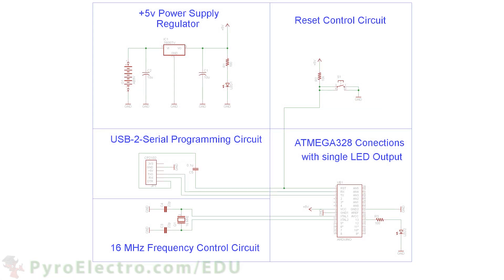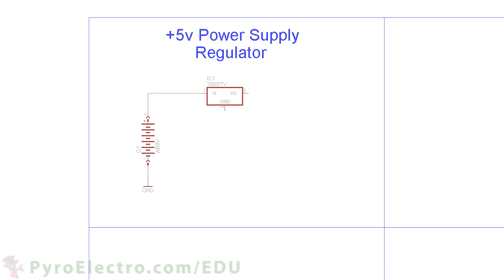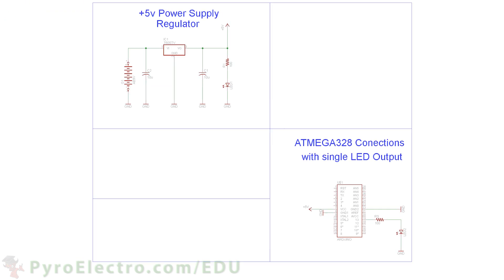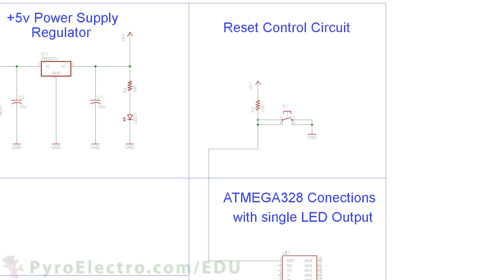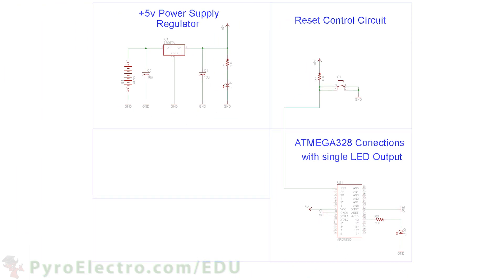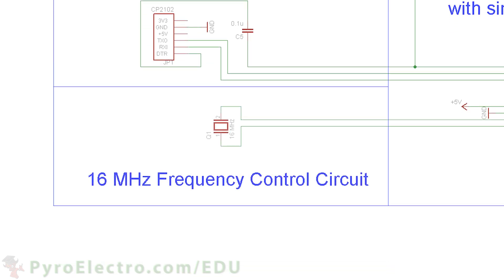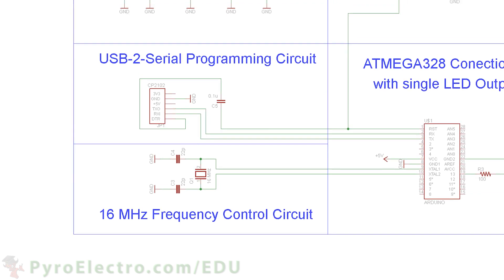The hardware for this experiment is exactly the same as in lesson 4. We use a 7805 and 9V battery to make a plus 5V voltage regulation circuit. The plus 5V and ground connect to the microcontroller, as well as a resistor and LED going to ground from digital pin 13. A reset circuit with a push button connects to pin 1. The USB to serial converter module connects to the TX and RX pins. Finally, the frequency control circuit is built using two 22 pF capacitors and a 16 MHz crystal.